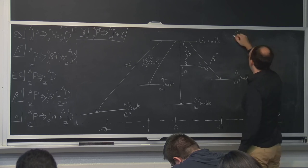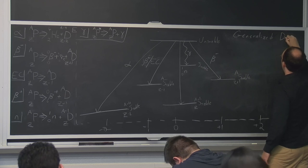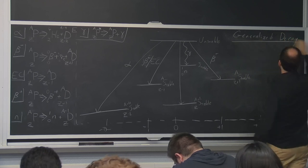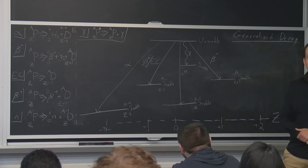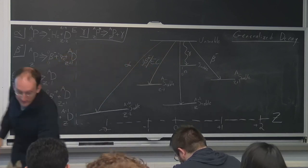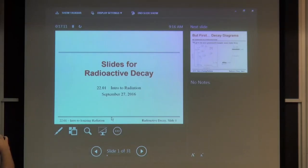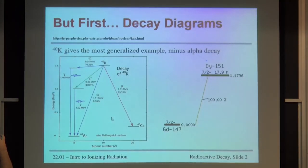So this right here would be the generalized decay diagram. Anyone ever heard of one isotope that undergoes all these possible decay mechanisms? I'm glad no one's saying anything, because neither have I. There's one that comes close. If you look at potassium-40, the nuclide we probably talked about the most so far, it covers most of the space of this generalized decay diagram.